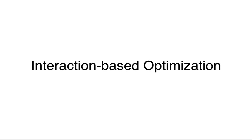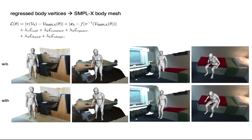On top of this network, we include an interaction-based optimization, which converts the generated body mesh to a SMPL-X body mesh to smooth the generated body mesh and further improve scene-human interactions. The optimization goals include three parts: reconstruction for generated body vertices and body features; collision and contact terms to alleviate interpenetration and improve contact relationship; and terms to ensure natural body pose, body shape, and hand pose.